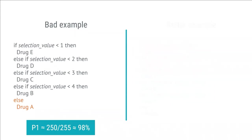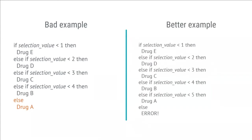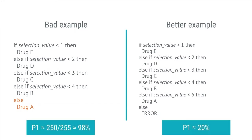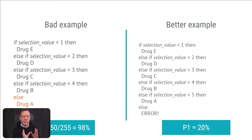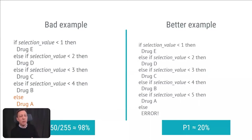That's not a flattering number. In a better example, drug A has its own selection row, and all other values trigger an error. If we allow ourselves to simplify the statistics and assume that an error state is acceptable, a software failure messing up the selection value will result in a much lower P1. My point is to show how the likelihood of software failure depends on the software design — and this justifies why we should start with assuming a very high P1, because poor design leads to higher likelihood of software failing.